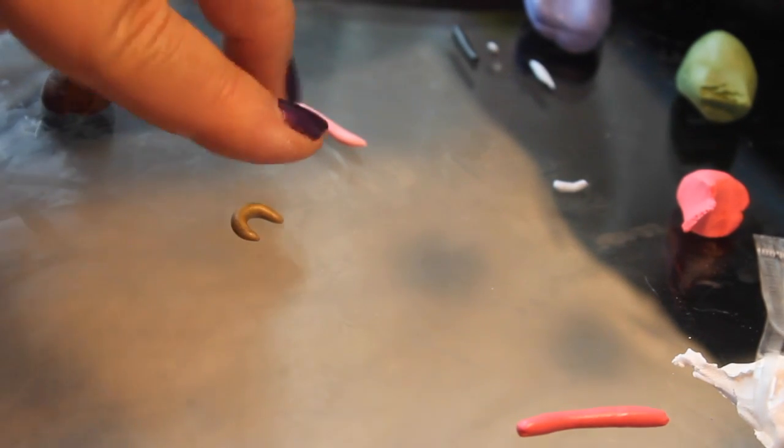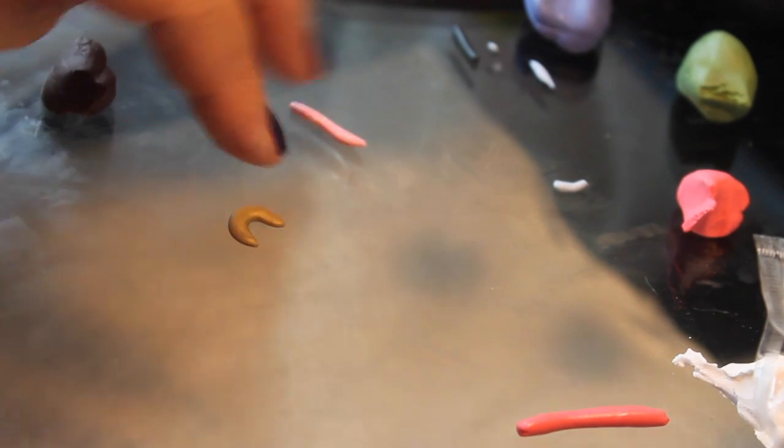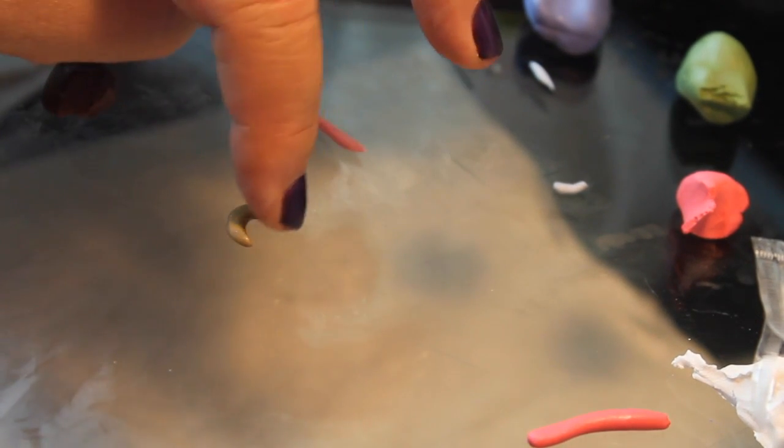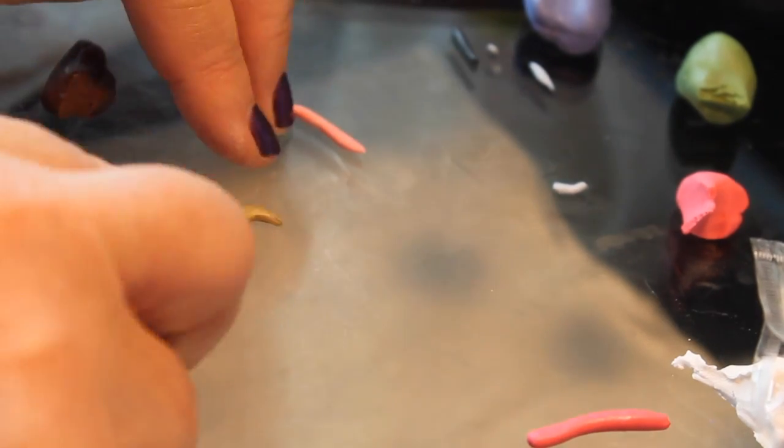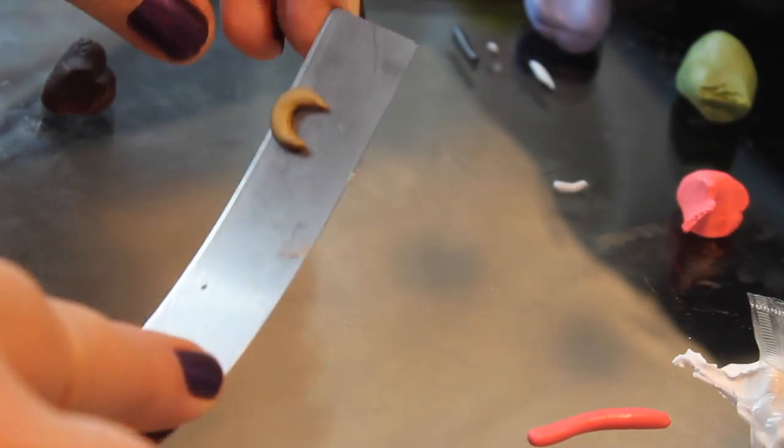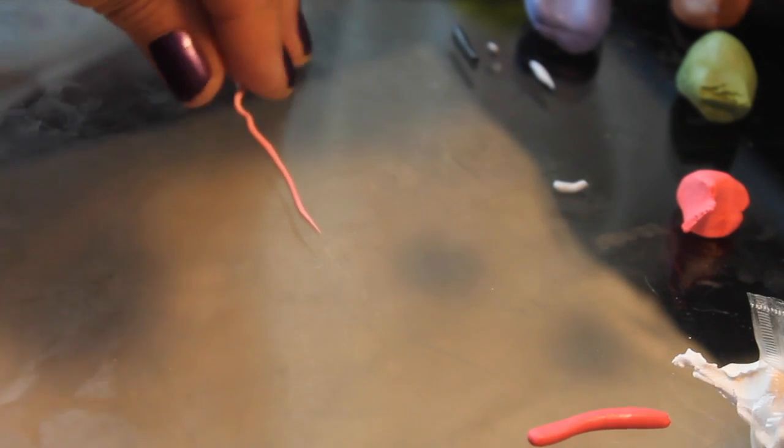And now, for the last, I think this is the last one, I'm making just a half moon shape out of a gold glittery clay. It's also Primo Sculpey. Yeah, that's all we need for that.